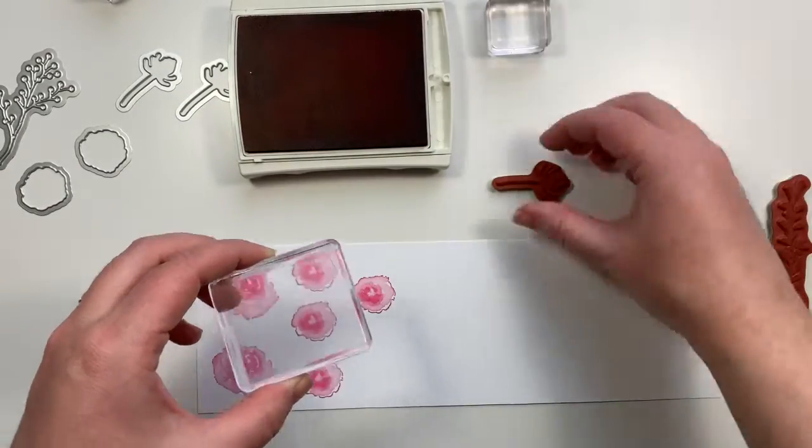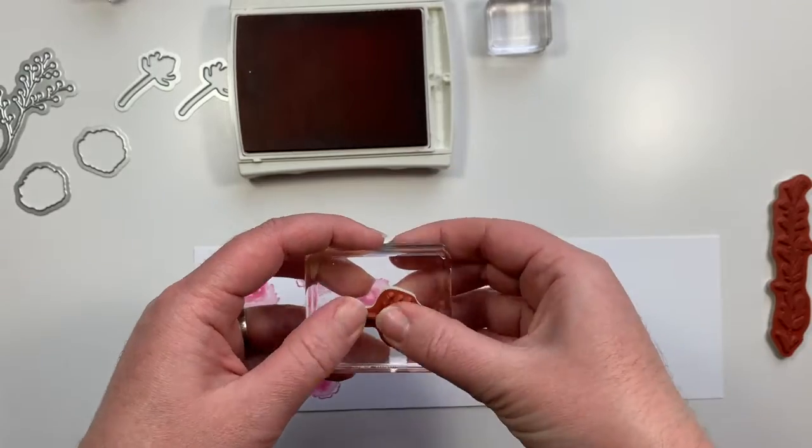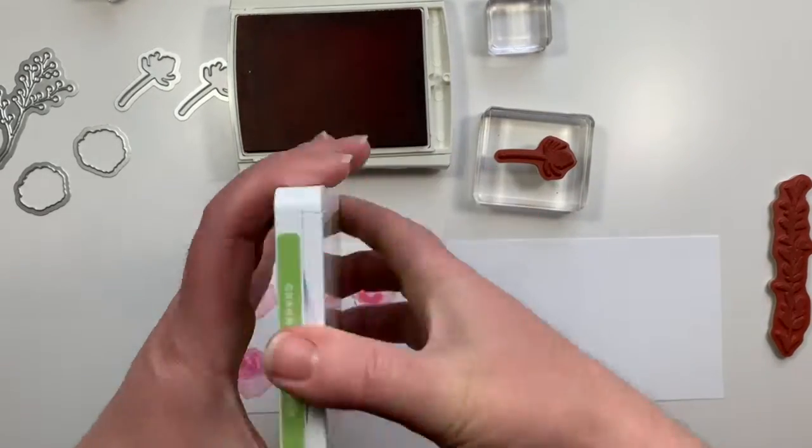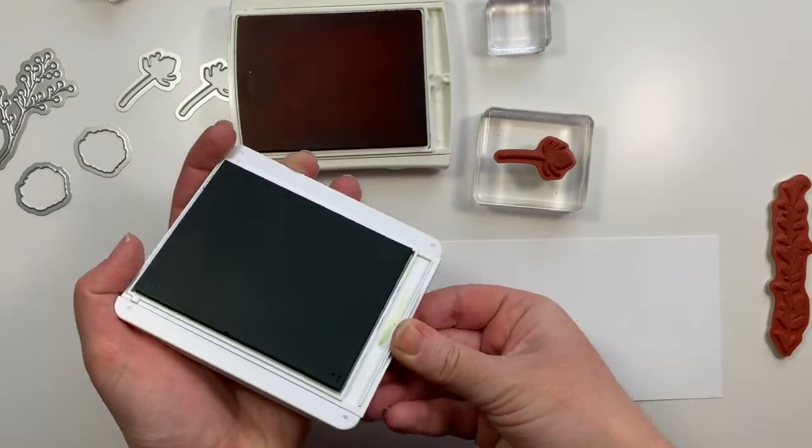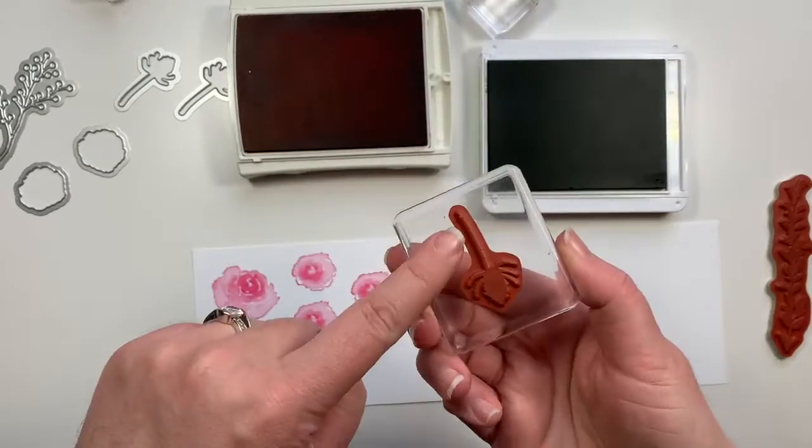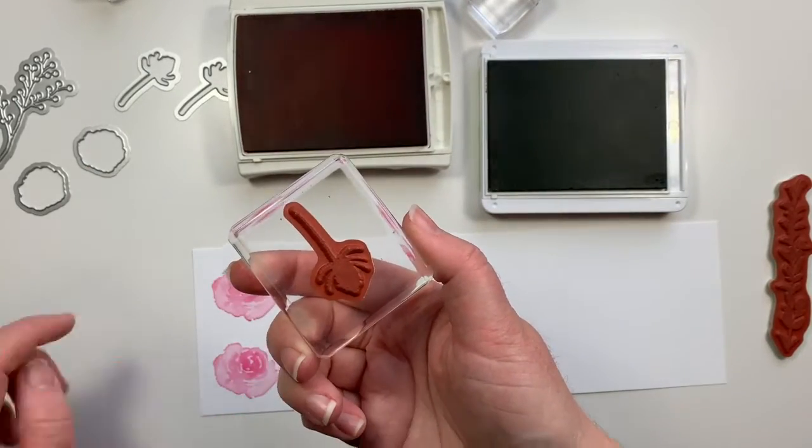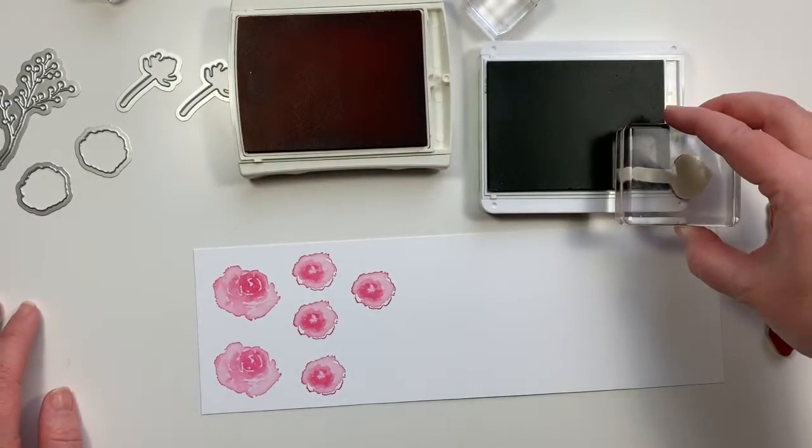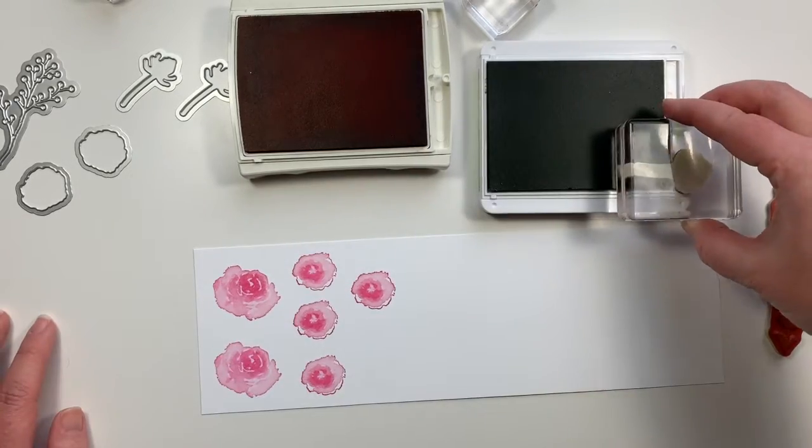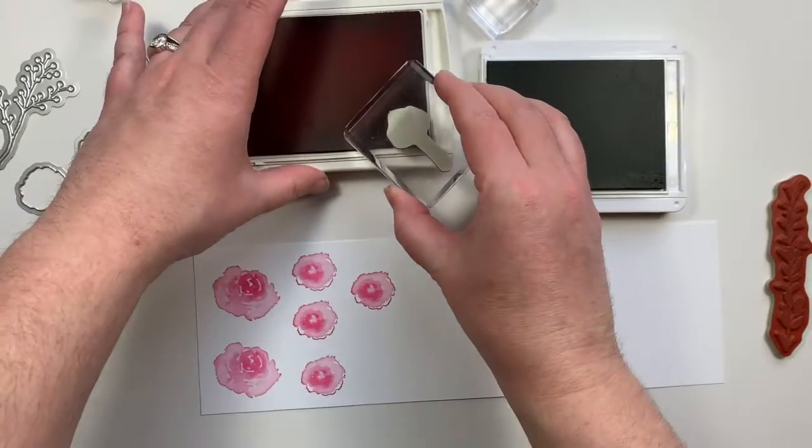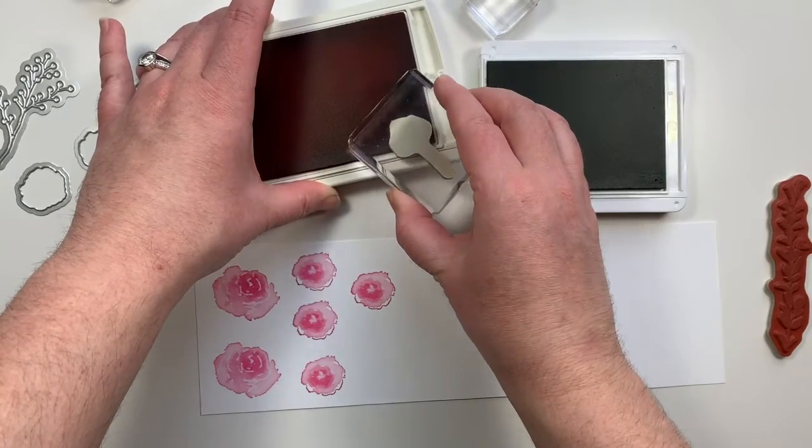Now to stamp this little bud I'm going to use both of my ink pads and I'm going to stamp the stem only in the Granny Apple Green and then I'm going to use the Melon Mambo to ink up the bud. That way I can get two colors out of this one stamp.